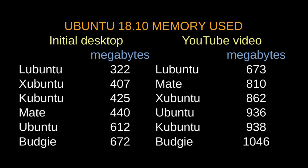With the initial desktop running, Lubuntu comes in lowest at 322 megabytes, Xubuntu next with 425 megabytes, Mate next with 440 megabytes, Kubuntu next with 612 megabytes, and Budgie next at 672 megabytes.